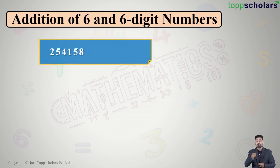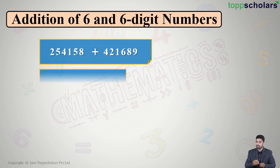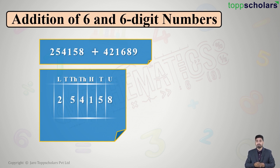Here we have two lakh fifty four thousand one hundred and fifty eight, plus the second number is four lakh twenty one thousand six hundred and eighty nine. To add these two six digit numbers, we will write them one below the other such that the digits are written exactly below their corresponding places — units, tens, hundreds, thousands, ten thousands, and lakh.